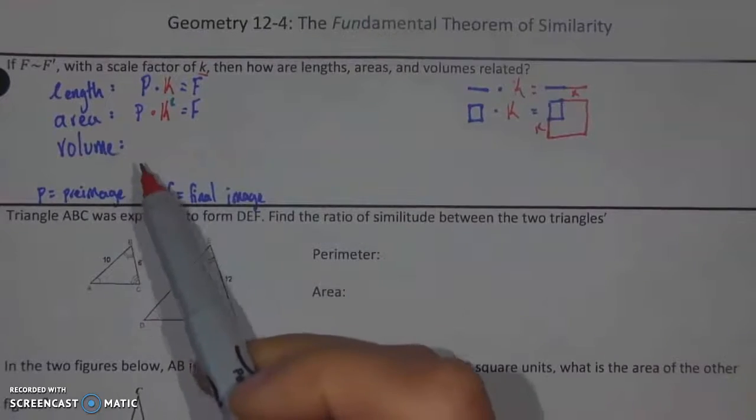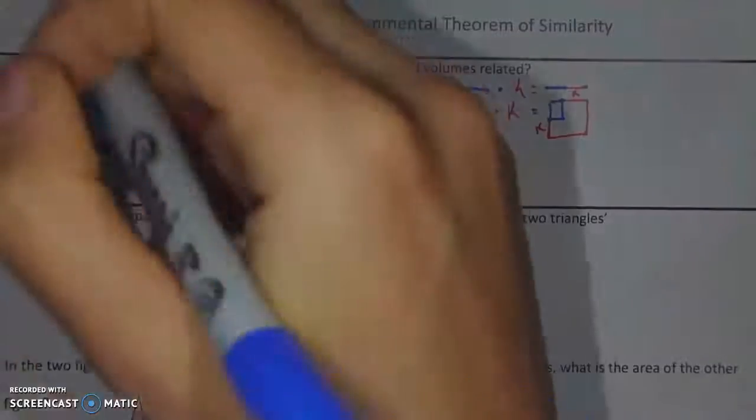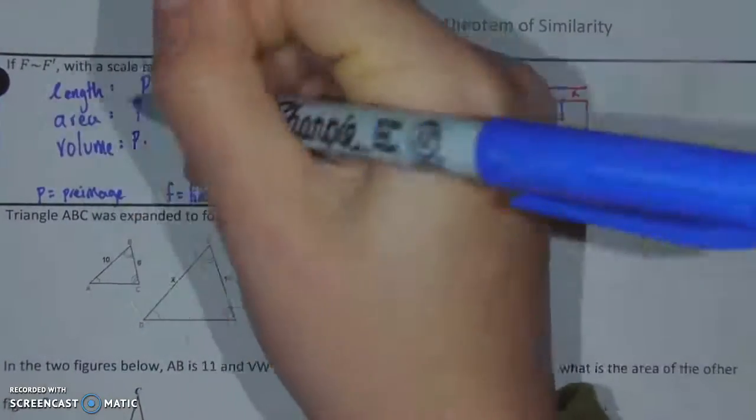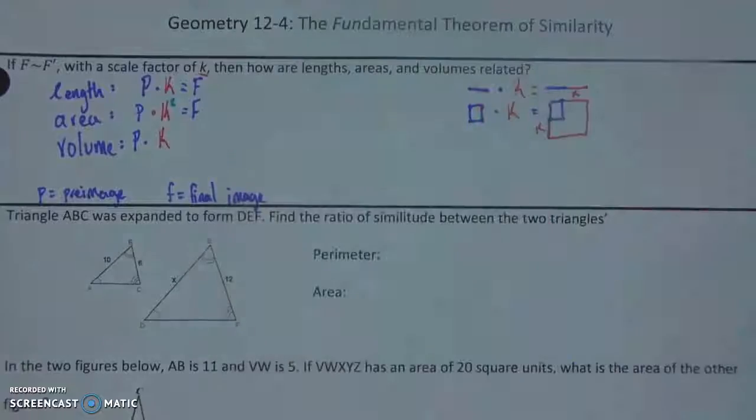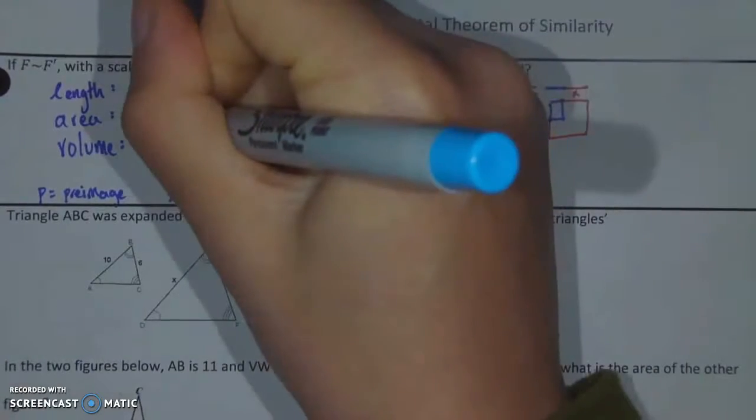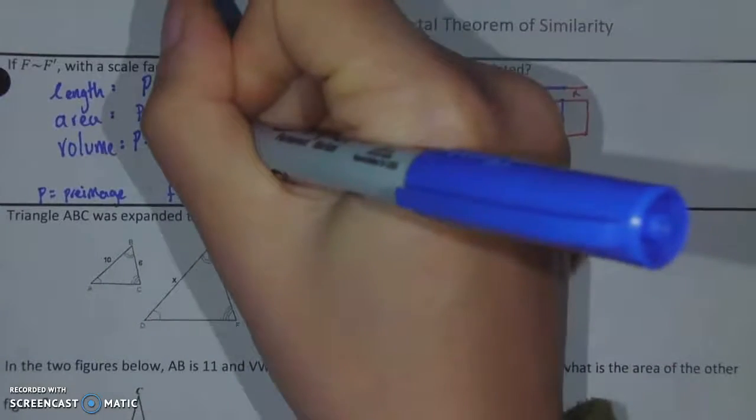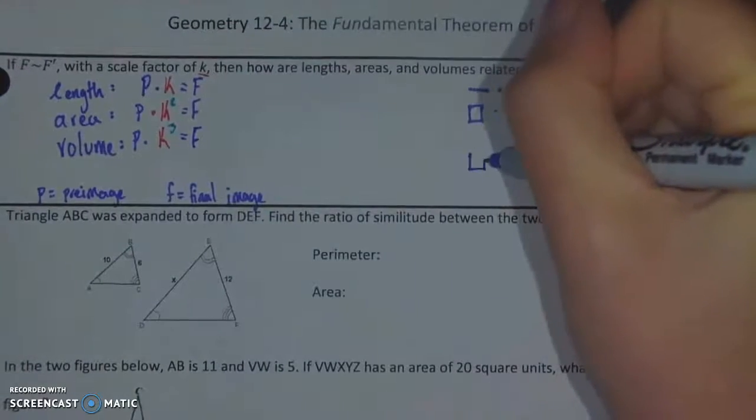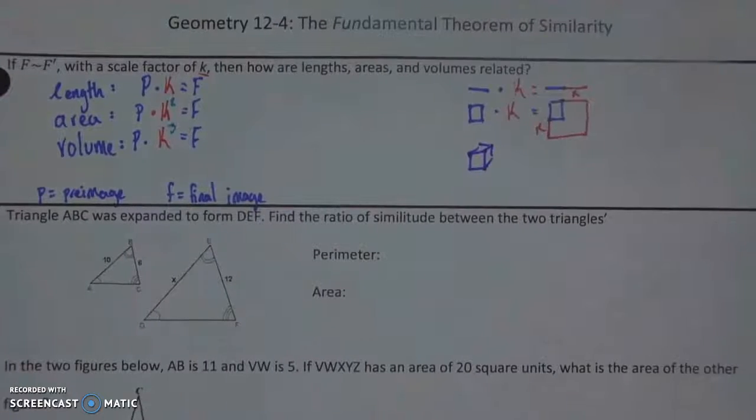Now, that leaves us to volume, and I'm pretty sure you can guess what's going to happen here. I'm going to take my original volume, I'm going to multiply it by k, only this time I'm going to multiply it by k to the, well, you guessed it, third power, because I'm going to be multiplying in three dimensions. So, each one of these then, in my three-dimensional figure, will get multiplied by a k.